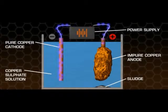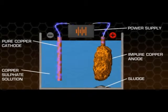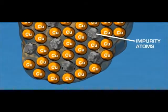The electrode reactions. The anode. The impure copper anode slowly dissolves. The copper ions go into solution and the electrons released return to the power supply.